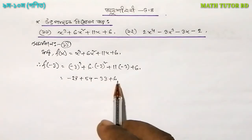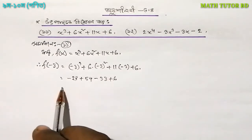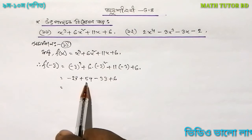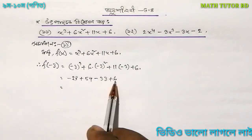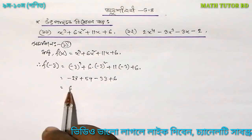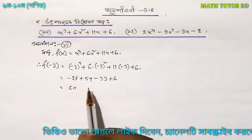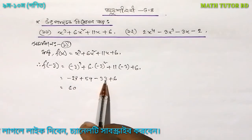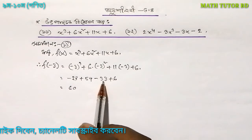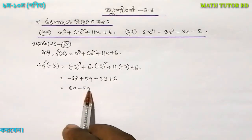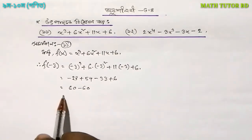We have minus 3. Look at this — how much is it? 54 and 6. How much is it? 60. How much is it? 27 and 33. How much is it? 60. How much is it? 0.